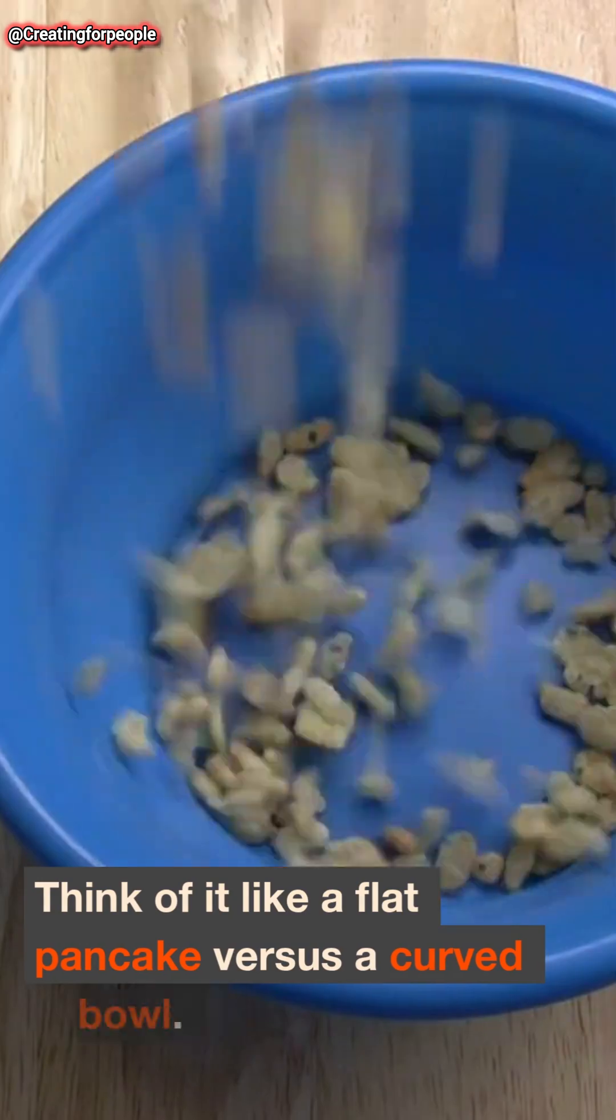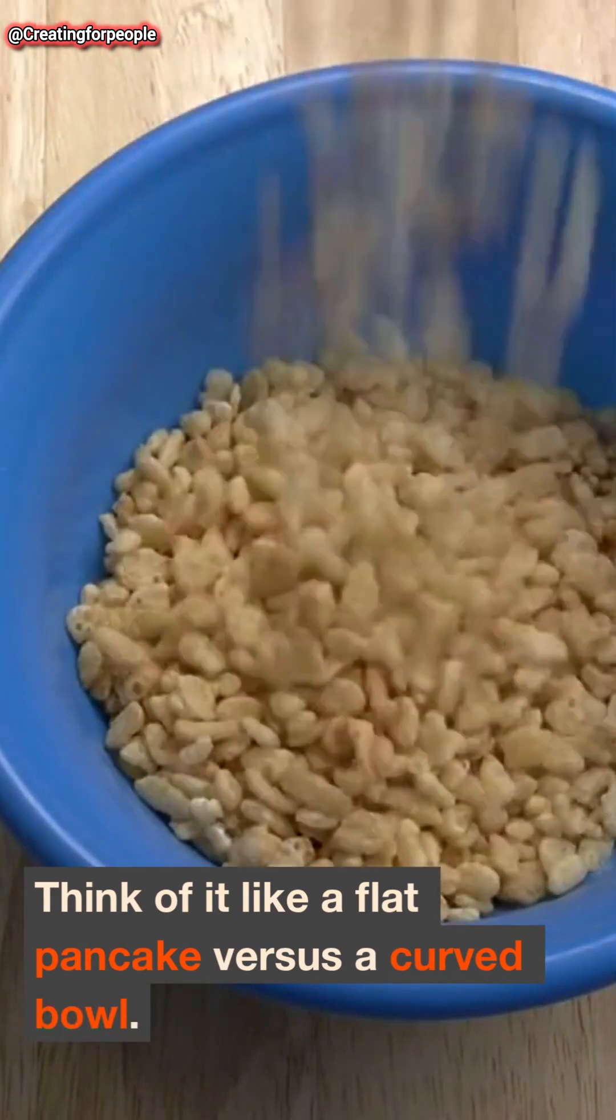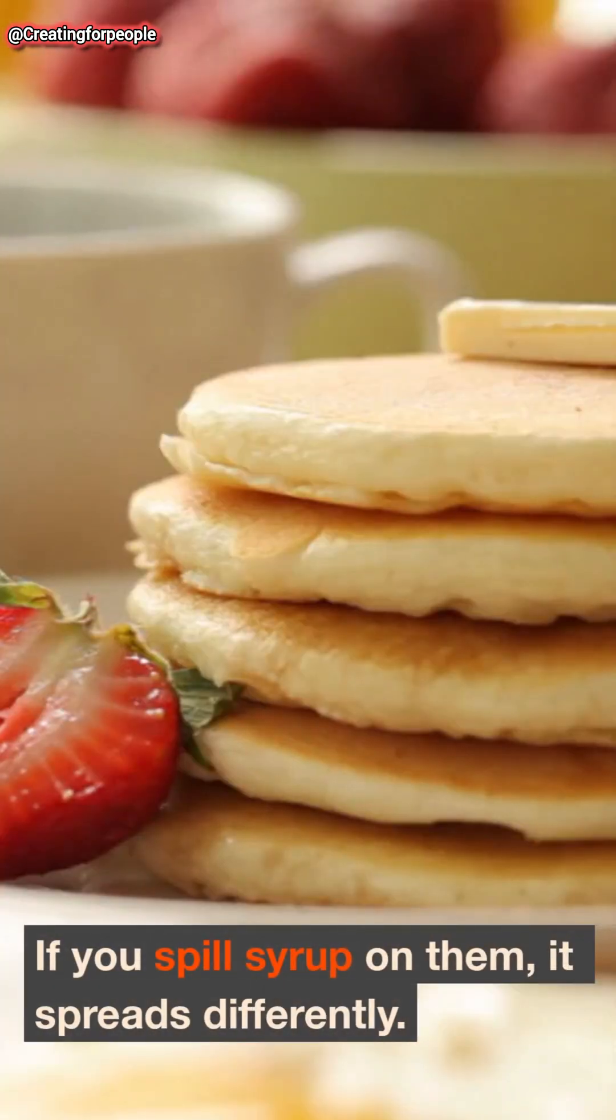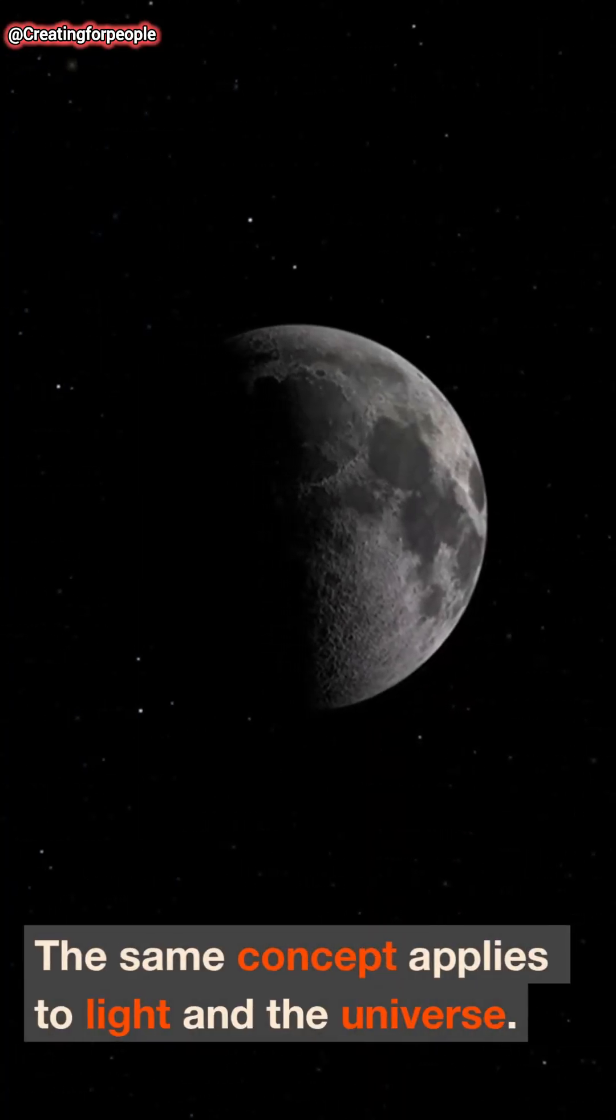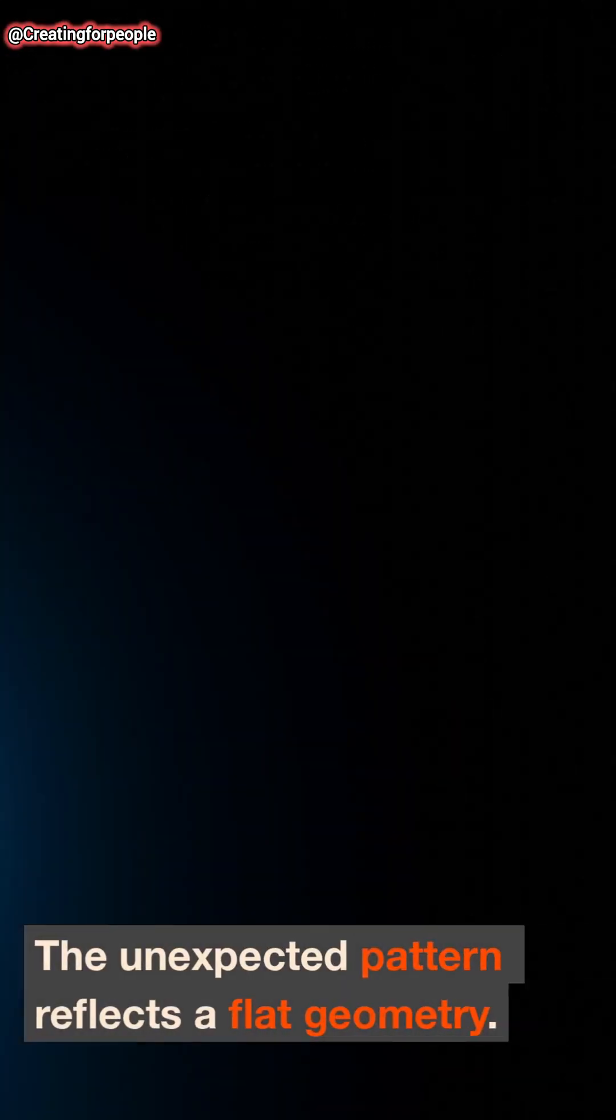Think of it like a flat pancake versus a curved bowl. If you spill syrup on them, it spreads differently. The same concept applies to light and the universe. The unexpected pattern reflects a flat geometry.